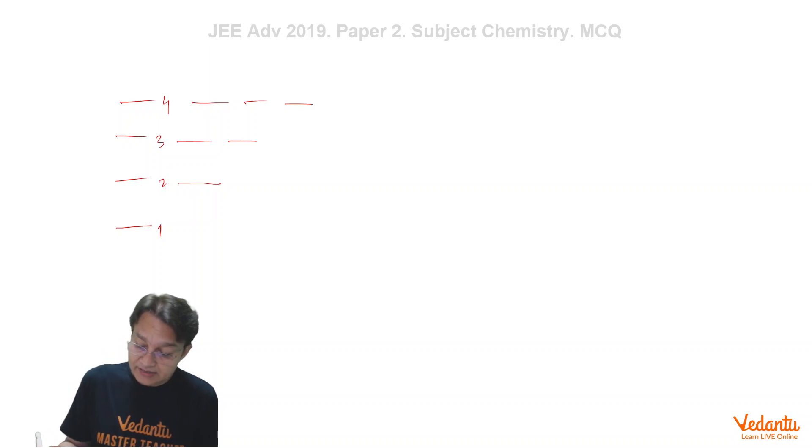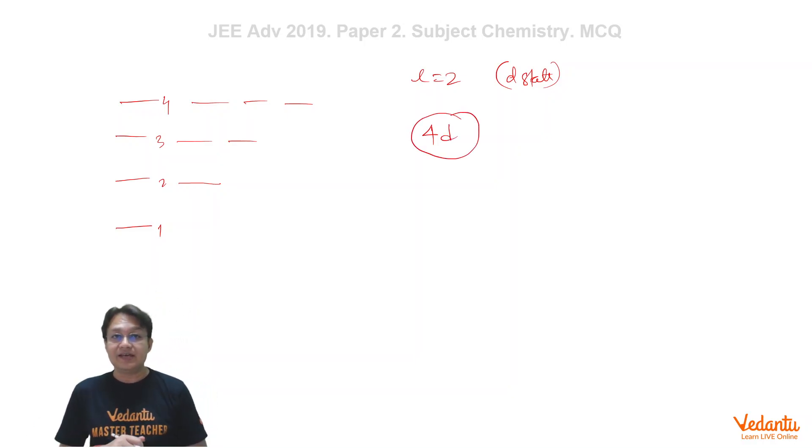So we have this, and it has been given that L is equals to 2. Definitely L is equals to 2 means what? D state. And so we come to know that this state is 4D state. So of course option A is correct, that is 4D state.